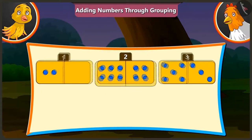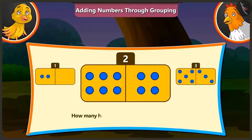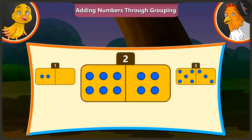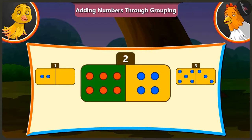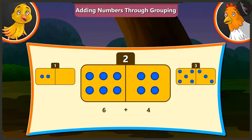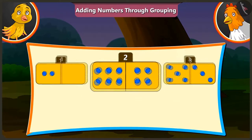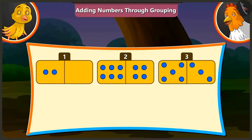Now tell me the number of holes on the second card. The second card has 6 and 4 holes. If we add 4 to 6, we get 10 holes. Wow, Pilu!